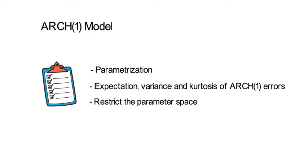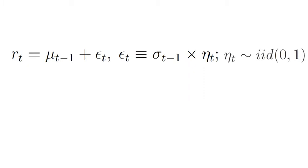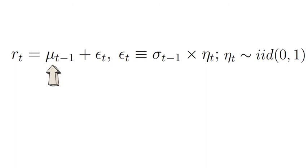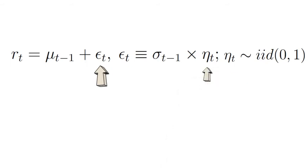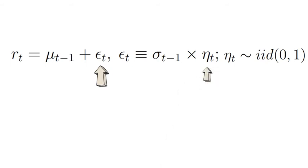In order to introduce the ARCH1 model I want to remind you of our basic return decomposition. It says that we can decompose realized time t returns into an expectation which is mu t minus 1 — the expectation of r_t as of time t minus 1 — and into a statistical return innovation epsilon_t. That innovation is the product of an F_{t-1}-measurable volatility sigma_{t-1} and a fundamental innovation eta_t.